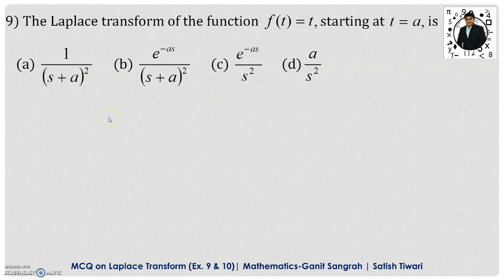What we have to find out here is the Laplace transform of a displaced function, displaced by a distance a. For that we will use the formula: Laplace transform of f(t − a) · u(t − a) equals e^(−as) · F(s).